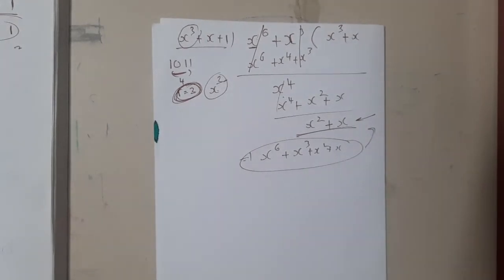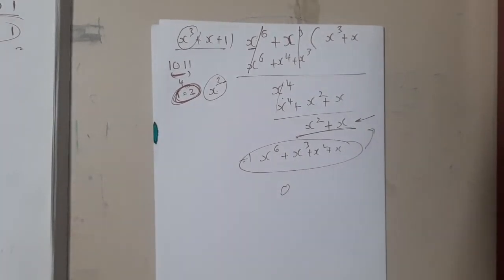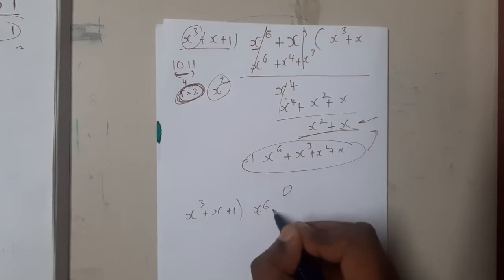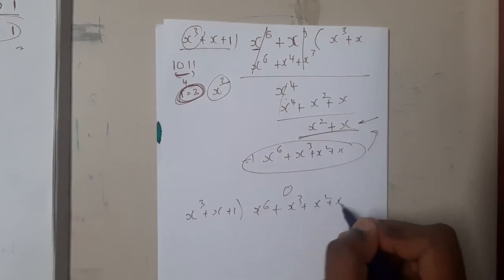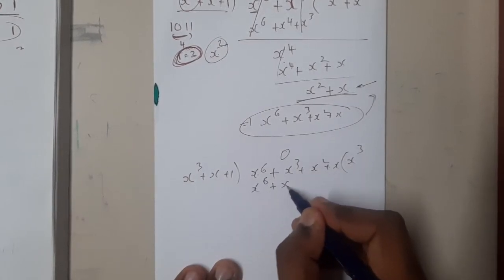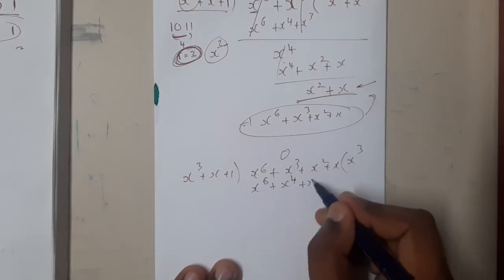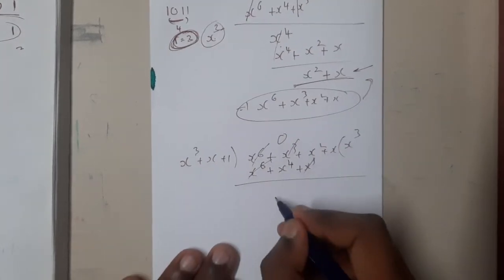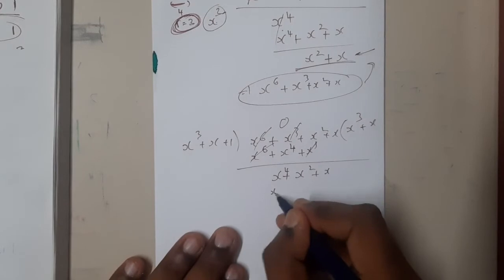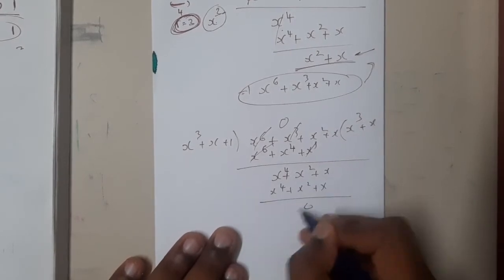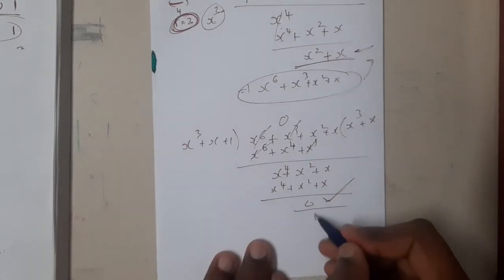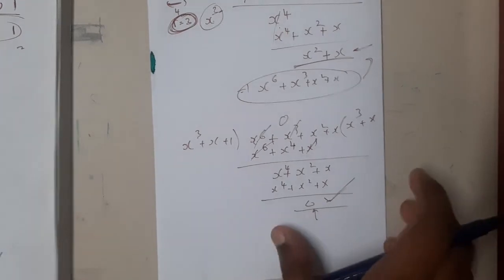To verify at the receiver side: divide x⁶ + x³ + x² + x by x³ + x + 1. Multiplying the divisor by x³ gives x⁶ + x⁴ + x³; after cancellation we get x⁴ + x² + x. Multiplying by x gives x⁴ + x² + x, which cancels completely, giving zero. Hence the message has been received successfully. If any bit changes, the result would be non-zero, indicating an error.